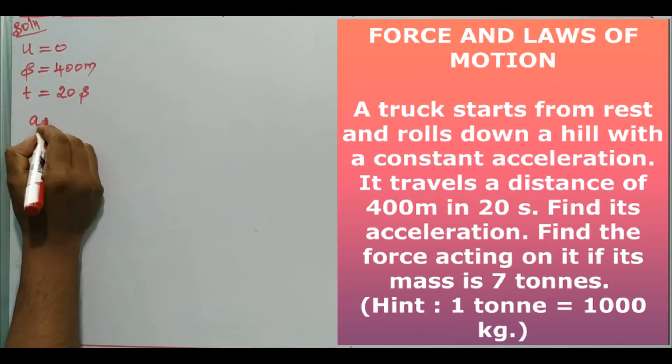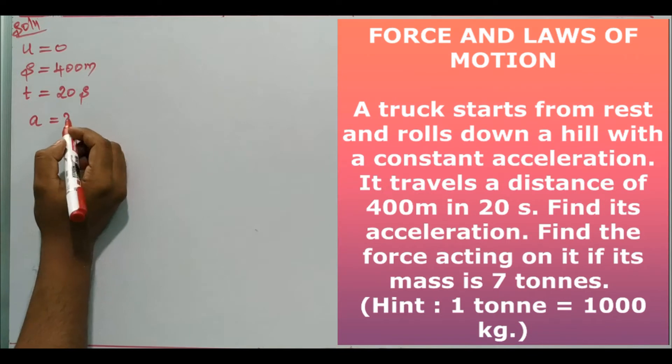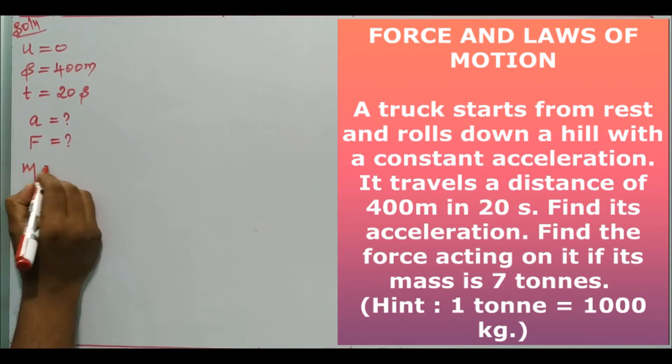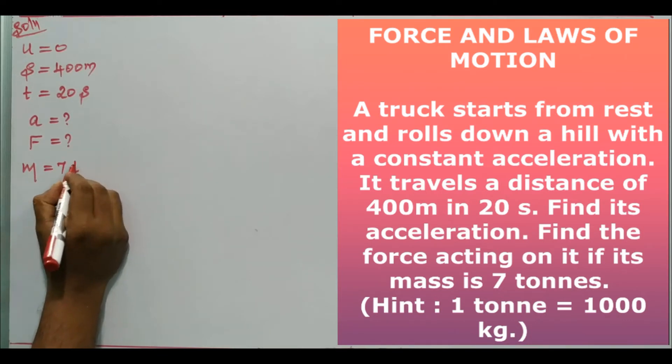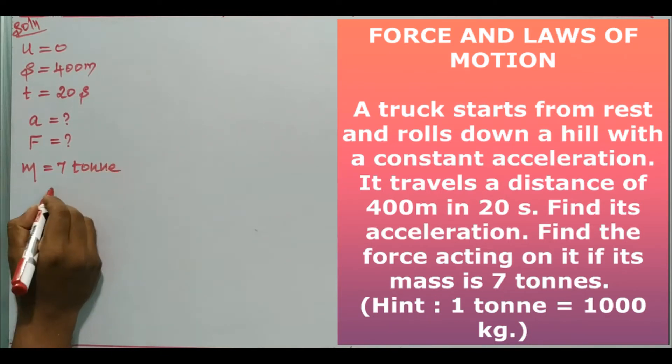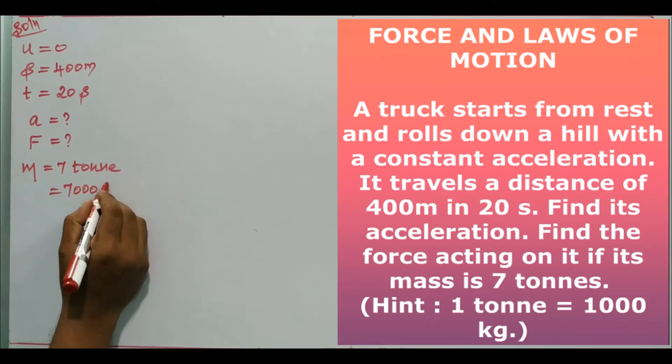We need to find the acceleration and the force on the truck. The mass of the truck m equals 7 tonnes. One tonne is 1000 kg, so that's 7000 kg.